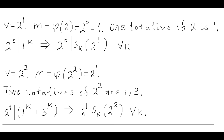If v equals 2, the statement works since the only totative of 2 is 1, and 1 raised to any power k is divisible by 1. For v equals 4, m equals 2, the totatives are 1 and 3, and any power of the two odd numbers 1 and 3 are also two odd numbers; their sum is even, so it's divisible by 2. It's interesting that the rest of the proof of this entire theorem will be done by induction based on this one simple fact.